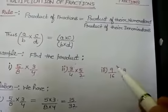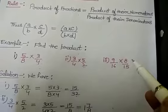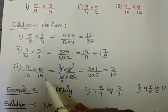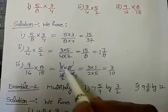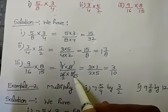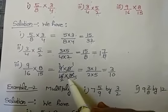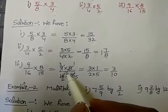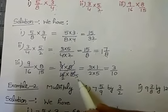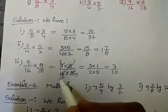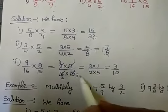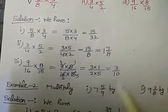Third example: 9 upon 16 multiplied by 8 upon 15. So, 9/16 × 8/15 equals the product of the numerators 9 into 8, upon the product of the denominators 16 into 15. Now we reduce by common factors: 3 divides 9 and 15; 8 divides 8 and 16. This gives 3 into 1 upon 2 into 5, so the answer is 3 upon 10.